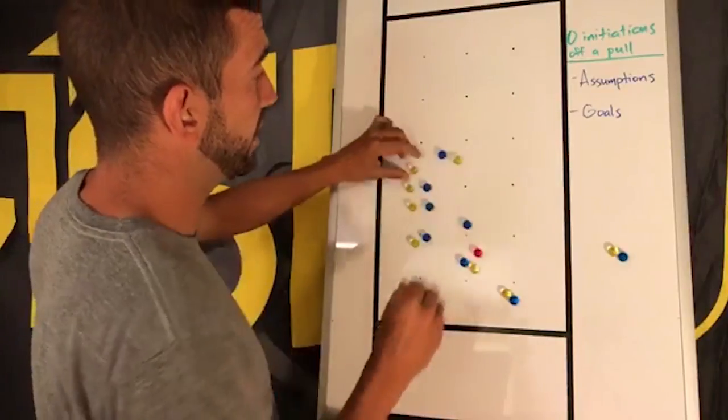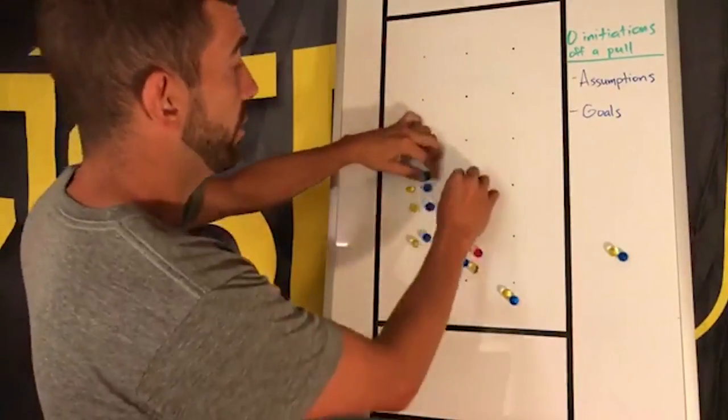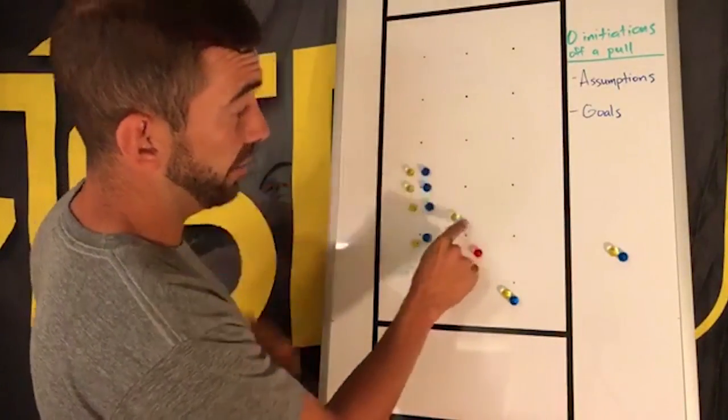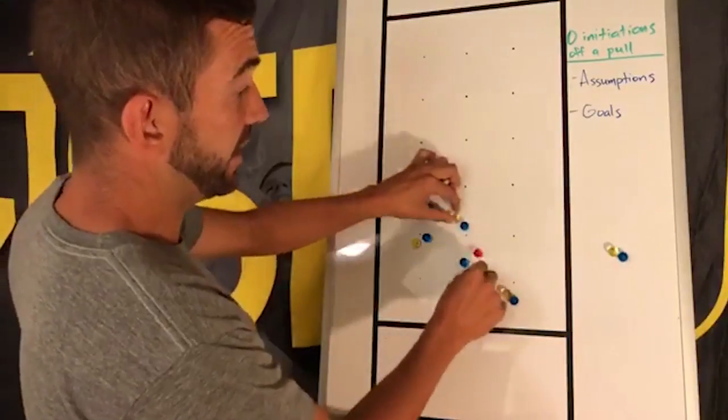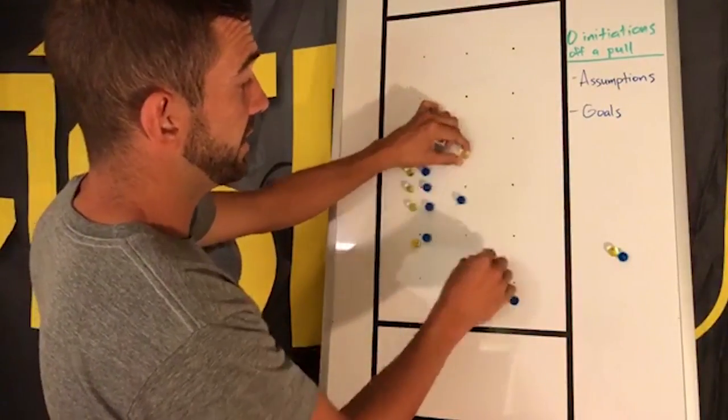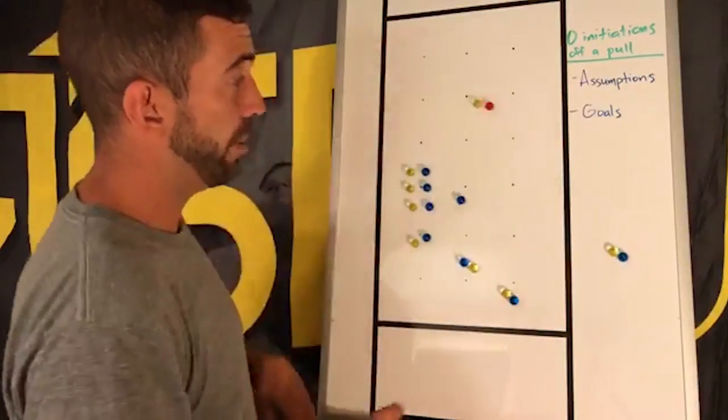What we're looking for here is this back defender. First of all, if this player is still fronting, then remember, this is your best thrower with the disc. This is a great option for a leading pass deep.